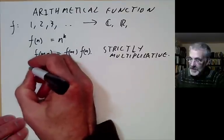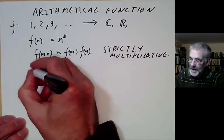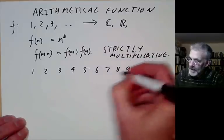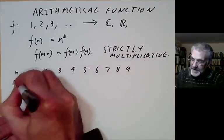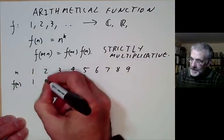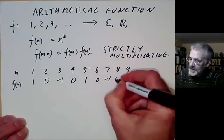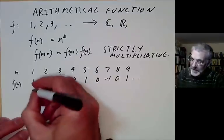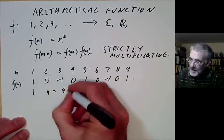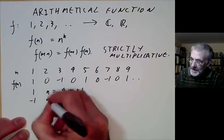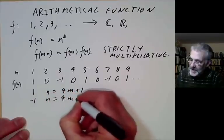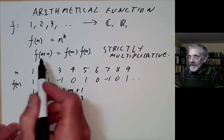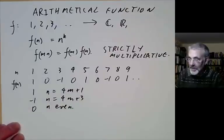There are also some other examples. For instance, we could have a function f(n) that goes 1, 0, −1, 0, 1, 0, −1, 0, 1, and so on — it just repeats with period 4. So it's equal to 1 if n ≡ 4m+1, equal to −1 if n ≡ 4m+3, and 0 if n is even. You can notice that this is also multiplicative.